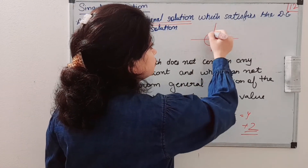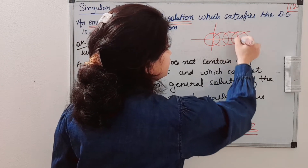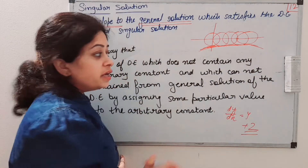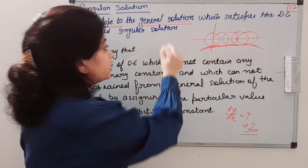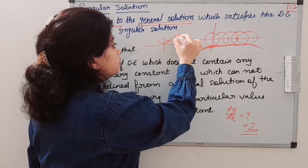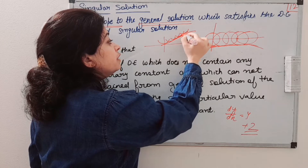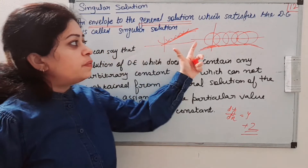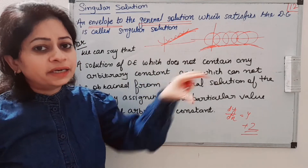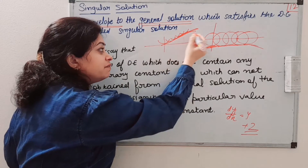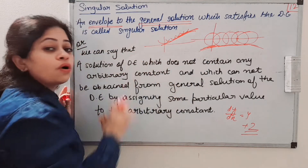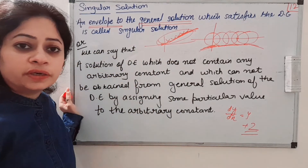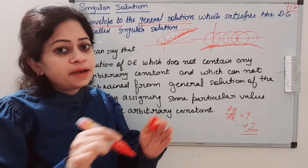Suppose we got a family of circles whose centers lie on the x-axis. Then a curve which touches each member of this family of curves is called the envelope of that family. Similarly, if we got a family of parabolas, a curve which touches each and every member of this family of curves is called the envelope. We will study this topic in detail separately, but here we just need to know: a curve that touches each and every member of the family of curves of the general solution is called the envelope of that family.